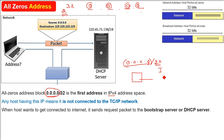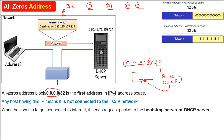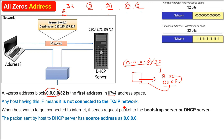The IP address giver can be a bootstrap server or a DHCP server. DHCP dynamically allots you an IP address — whichever is available — that is the only work of DHCP. The bootstrap server is the predecessor form of DHCP; DHCP is based on bootstrap.